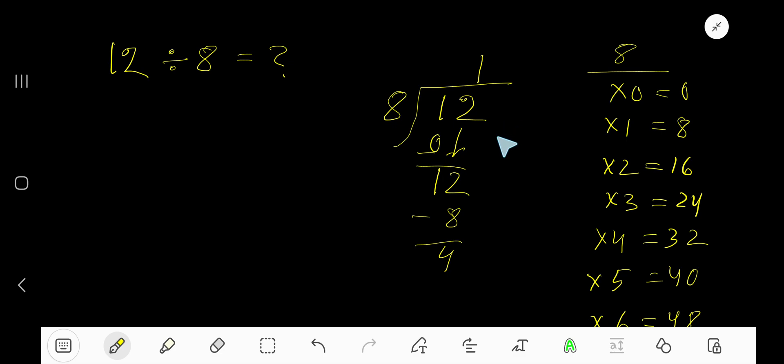But if you want to write your answer in decimal form, just convert this whole number into a decimal number. Take the decimal point and add 0.